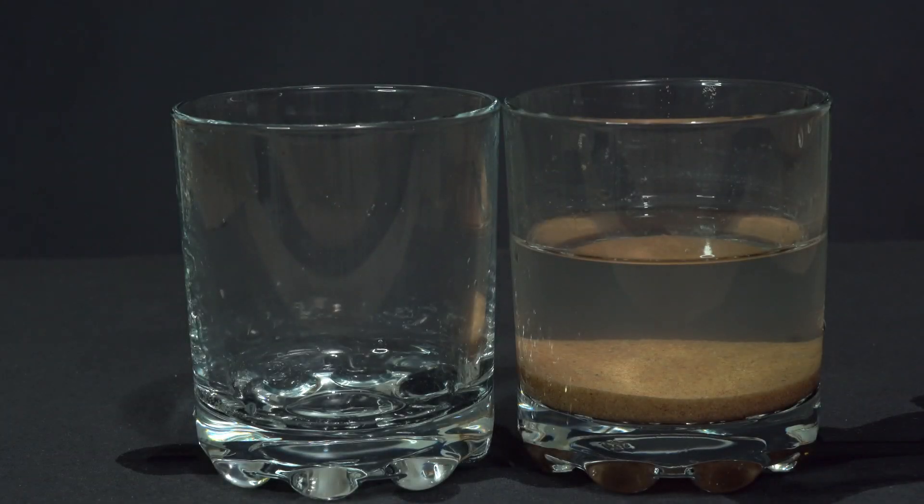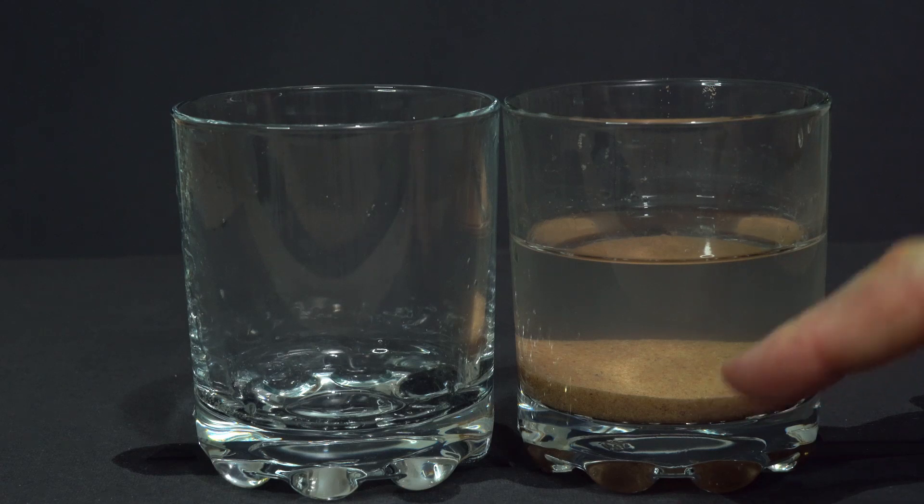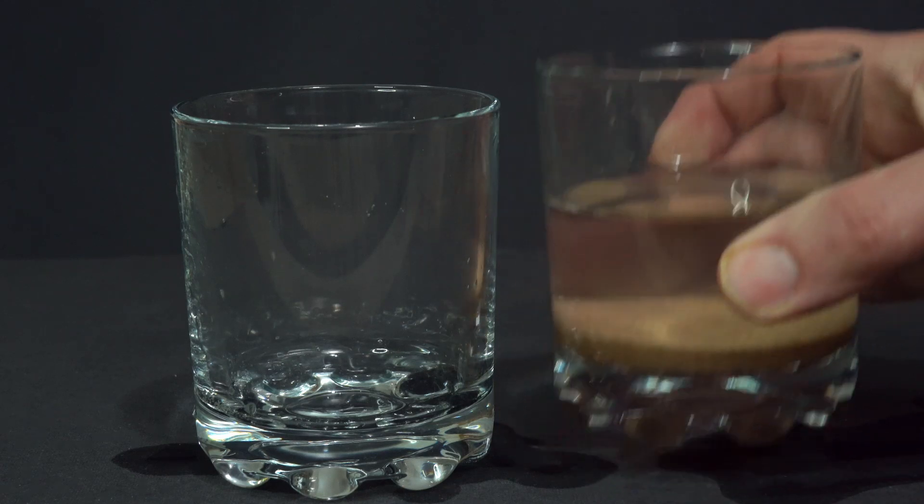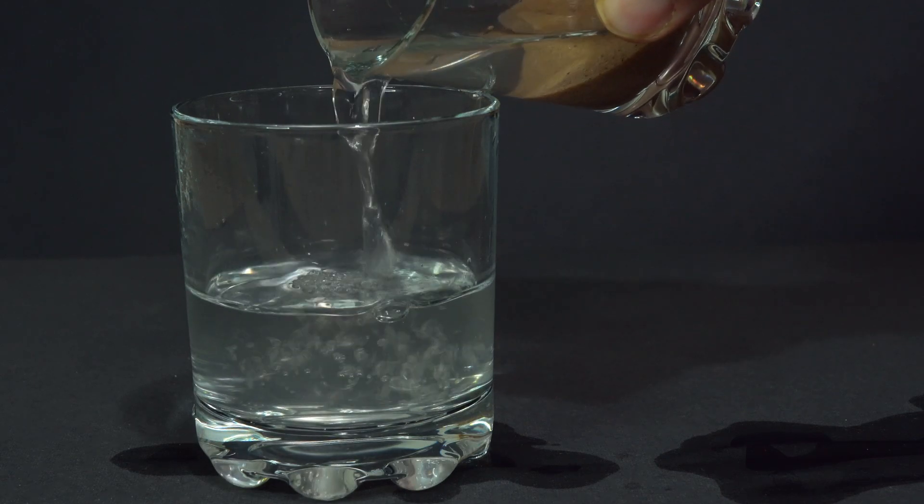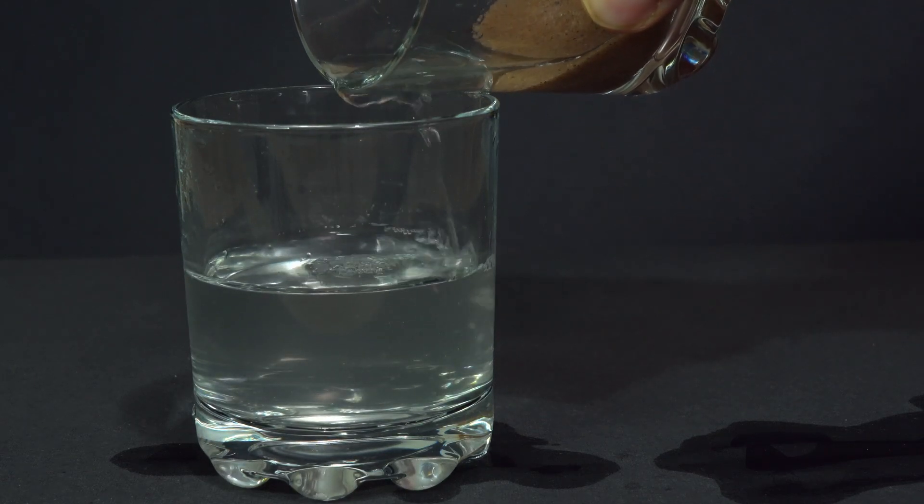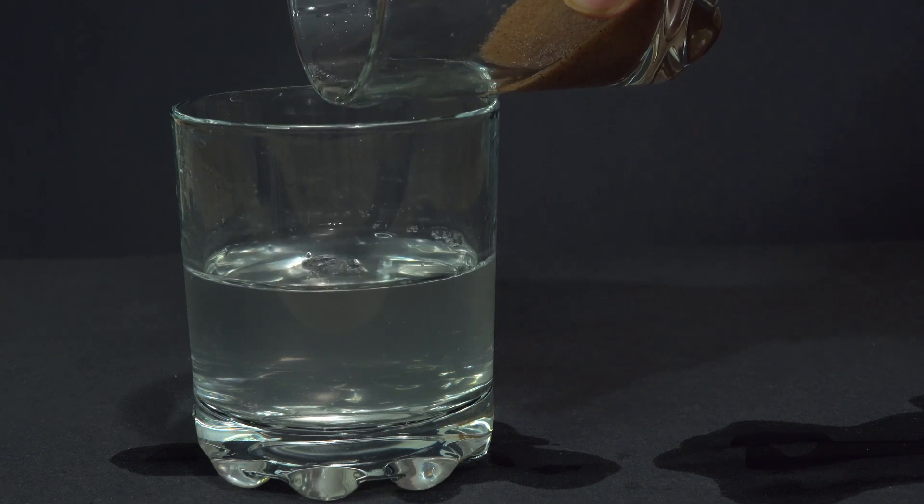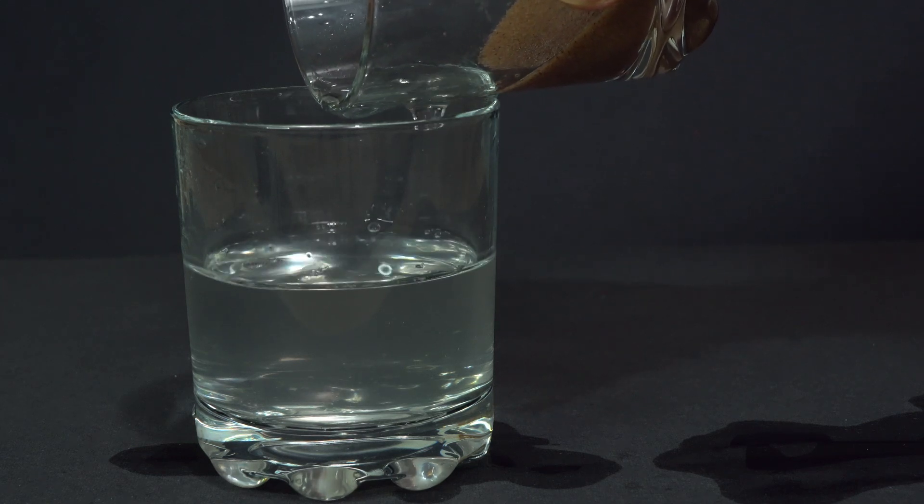For a bit of fun, we're going to try and get rid of the water and see what's left behind. Now I think with the flour and the salt, I'm going to have to boil the water away. But with this one, I think it's pretty clear that the sand is at the bottom. So all we need to do is pour the water that's at the top away and we're left with the sand.